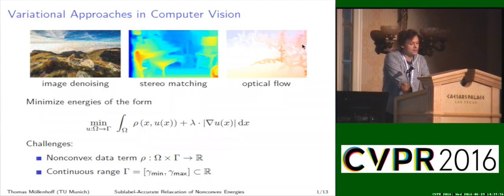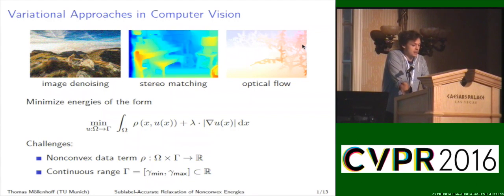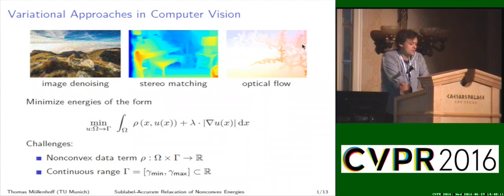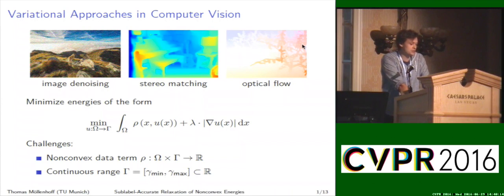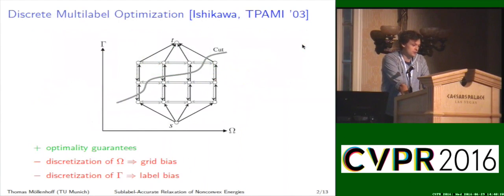As we will shortly see, there are also methods to globally optimize such energies. And the problem with these global optimization methods is the continuity of this range gamma. This will be the content of this talk: how to extend these global optimization methods to handle this continuous range in a natural and efficient way.